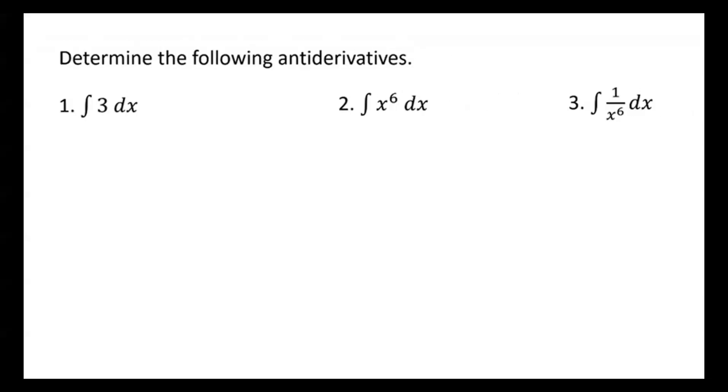Now let's look at the antiderivatives of algebraic functions using these rules. Rule (a): ∫dx = x + C. Rule (b): if n is any real number and n ≠ −1, then ∫xⁿ dx = x^(n+1) / (n+1) + C. Rule (c): if a is any constant and f is a function, then ∫a·f(x) dx = a·∫f(x) dx.